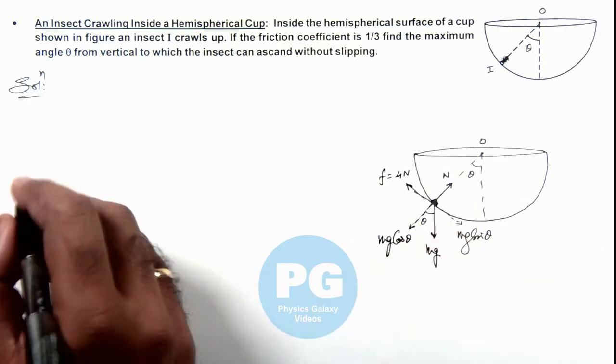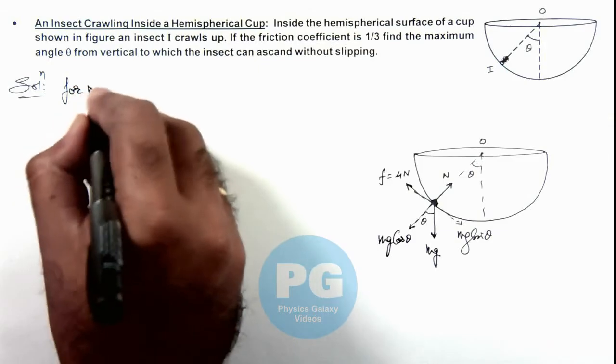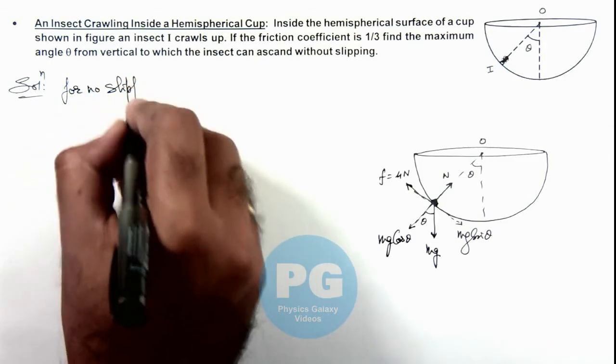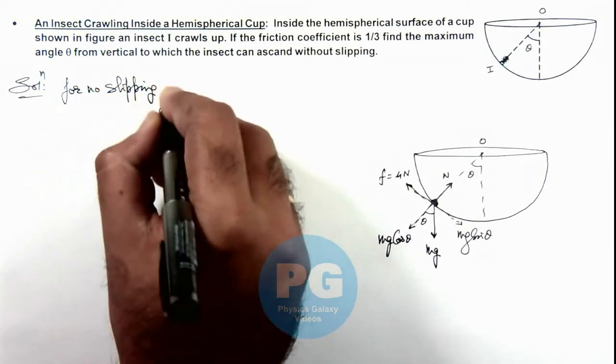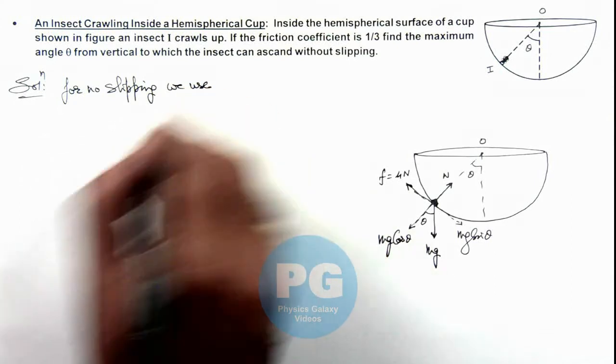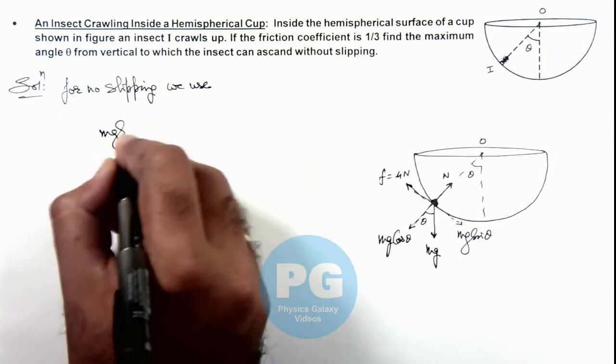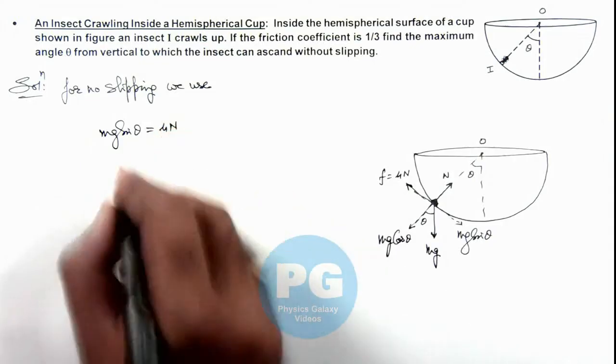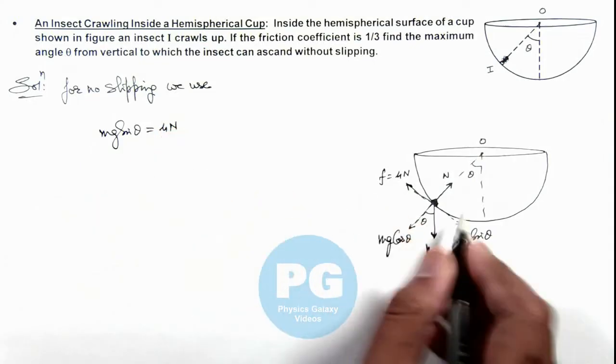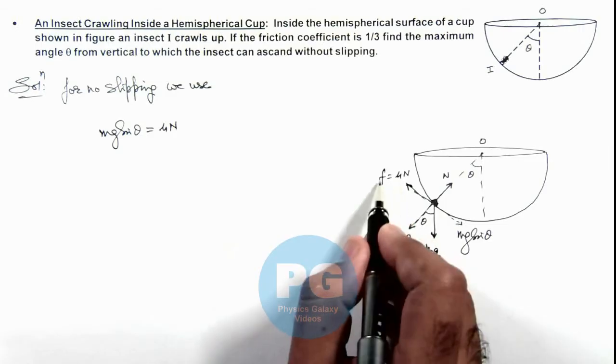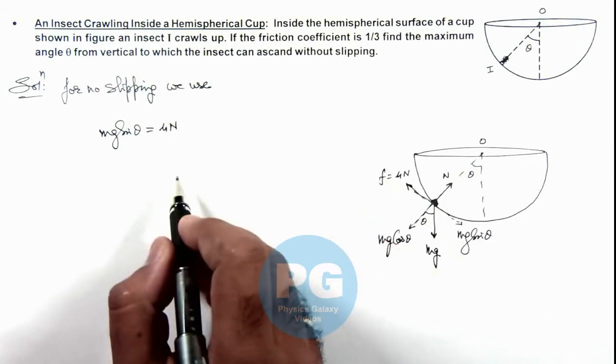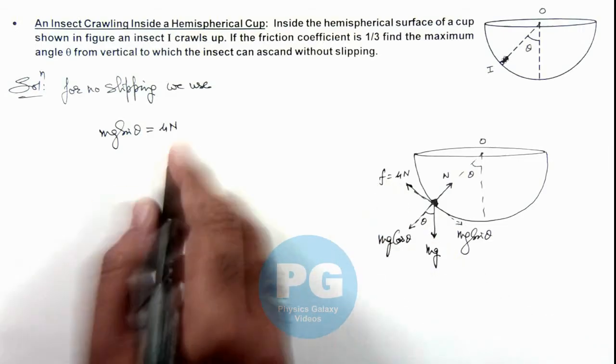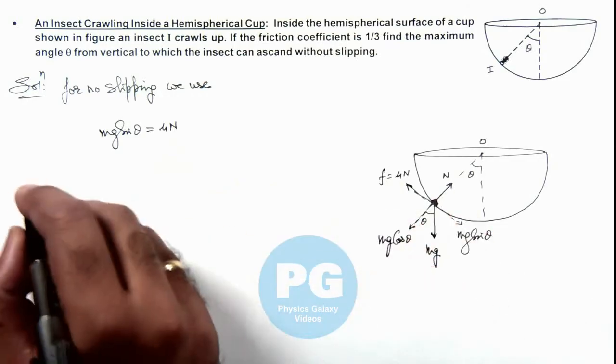For no slipping, we use the condition that mg sin theta, the sliding force, will be balanced by μN, the limiting friction. If theta is less, the friction will be static and less than μN. In this situation, we can substitute the value of N as mg cos theta.